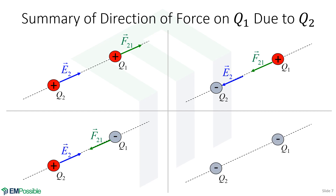And last, let's suppose they are both negative charges. Looking first at the second charge — it is negative, so the electric field will converge to it, pointing to the lower left. The first charge is also negative, which means the force on it will be in the opposite direction as the electric field applied to it. Since the electric field is pointing lower left, the opposite direction is upper right.